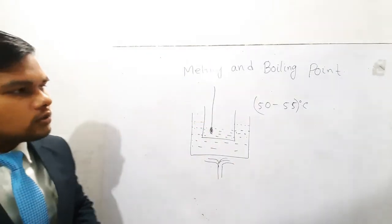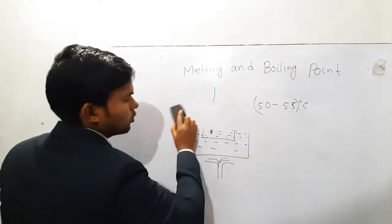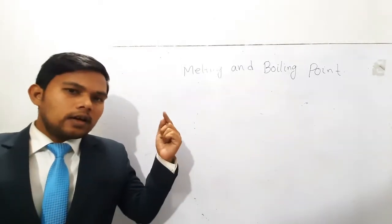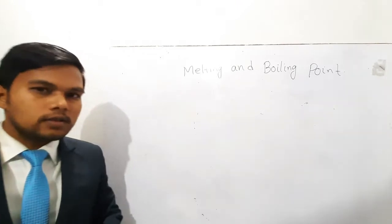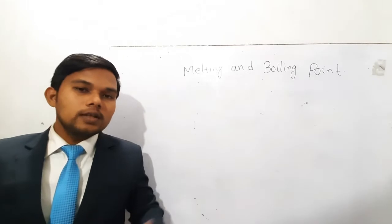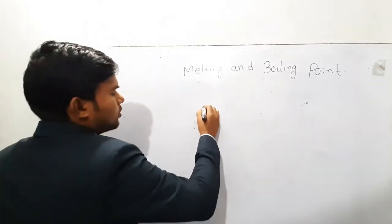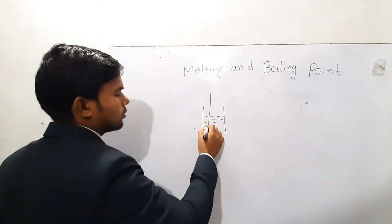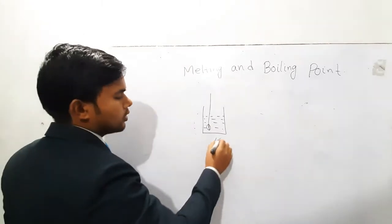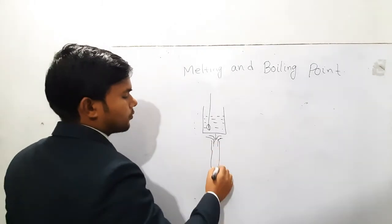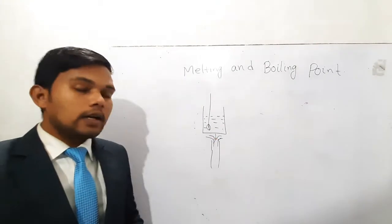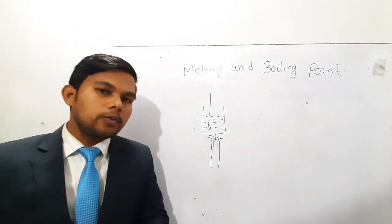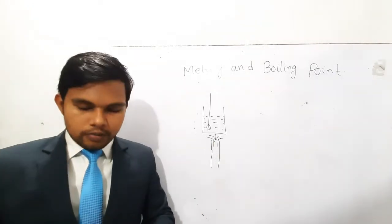Now, how will you determine the boiling point of a liquid? Boiling is the process where a liquid substance starts to boil, and the temperature at which the liquid substance just starts to boil is called the boiling point of that substance. We take a beaker filled with water, place a thermometer with its bulb inside the water, and apply heat using a Bunsen burner. The temperature of the water rises, and when it reaches 100 degrees Celsius, the water starts to boil. So 100°C is the boiling point of water.